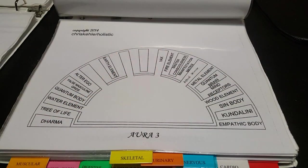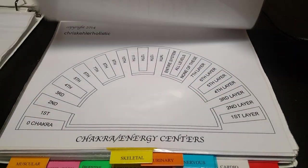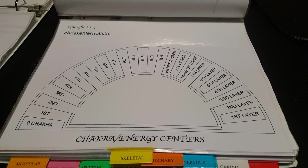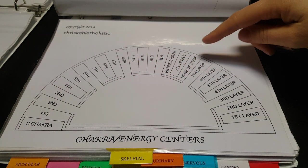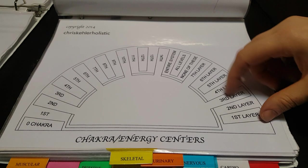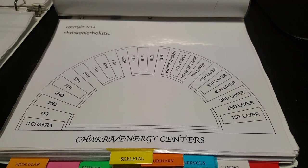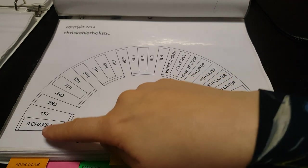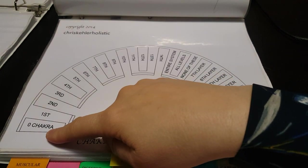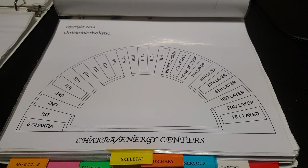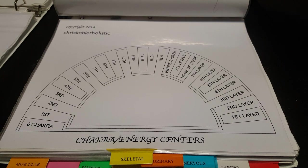Going to the chakra charts — a lot of energy practitioners work with seven chakras, but in our charts there are 14 different chakras, and then there are also seven different layers within each chakra. This allows me to douse for problems deep or hidden within your chakras. We also have the zero chakra, which is your root chakra located one foot below your feet. It's a very important chakra as it's the grounding chakra.